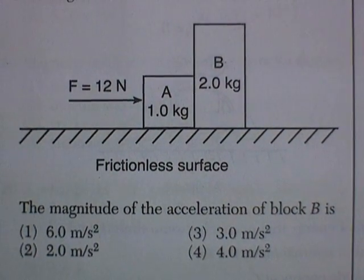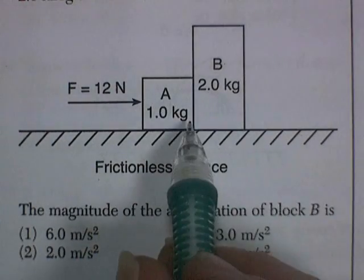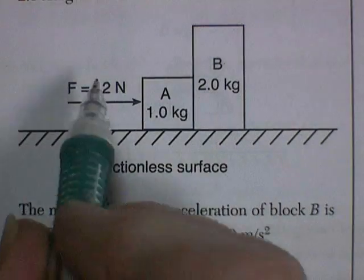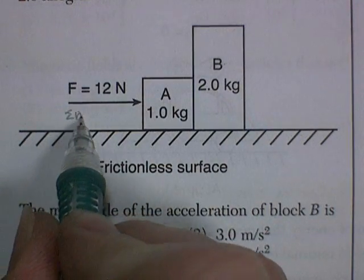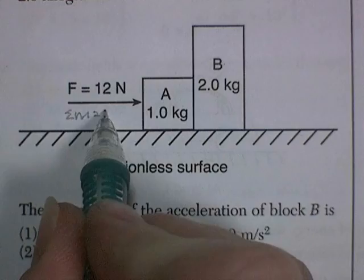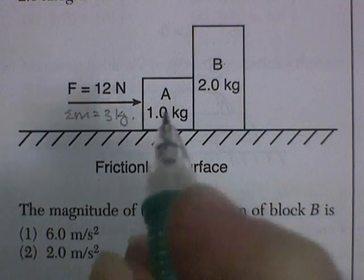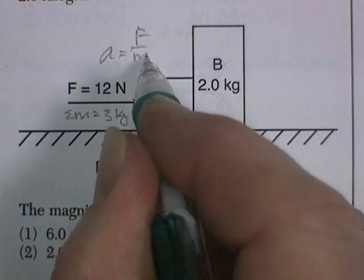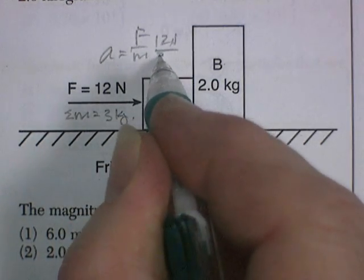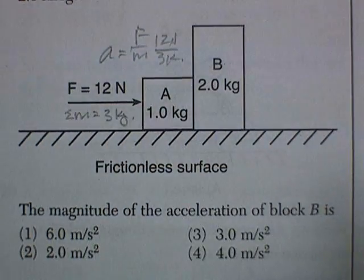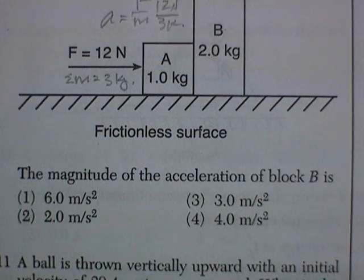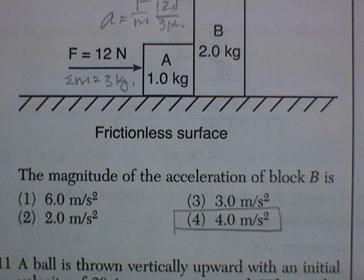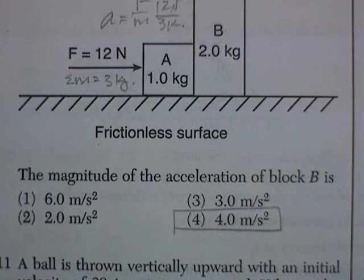The magnitude of the acceleration of block B is going to be the same as block A. This force is going to push both masses. So if the force is 12 Newtons, the total mass is going to be 3 kilograms. Acceleration is force divided by mass, 12 Newtons divided by 3 kilograms, gives us an acceleration of 4 meters per second squared. So they'll both have the same acceleration, 4 meters per second squared.